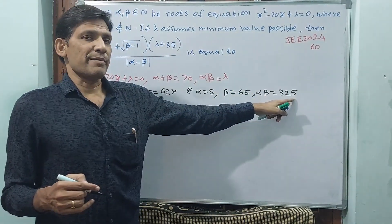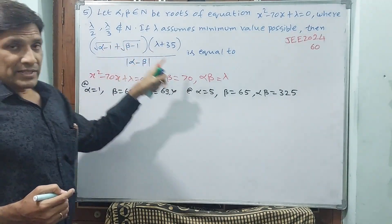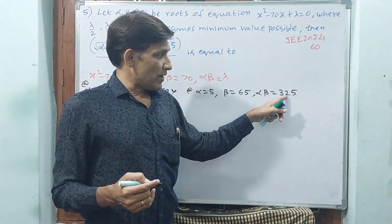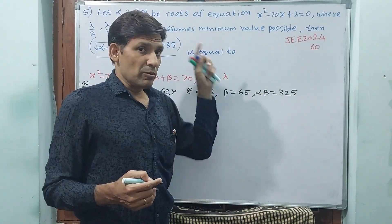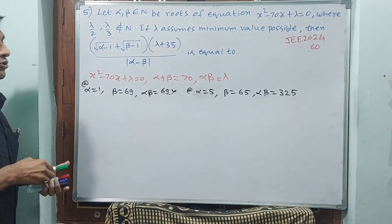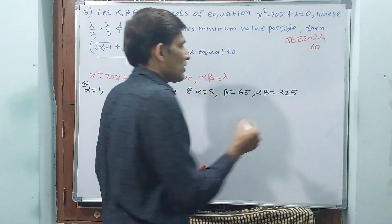Is it divisible by 2? No, why? Because it's an odd number. Is it divisible by 3? No, why? Because 3 + 2 + 5 + 5 = 10, and 10 is not divisible by 3. That is why αβ = 325. This is your λ.